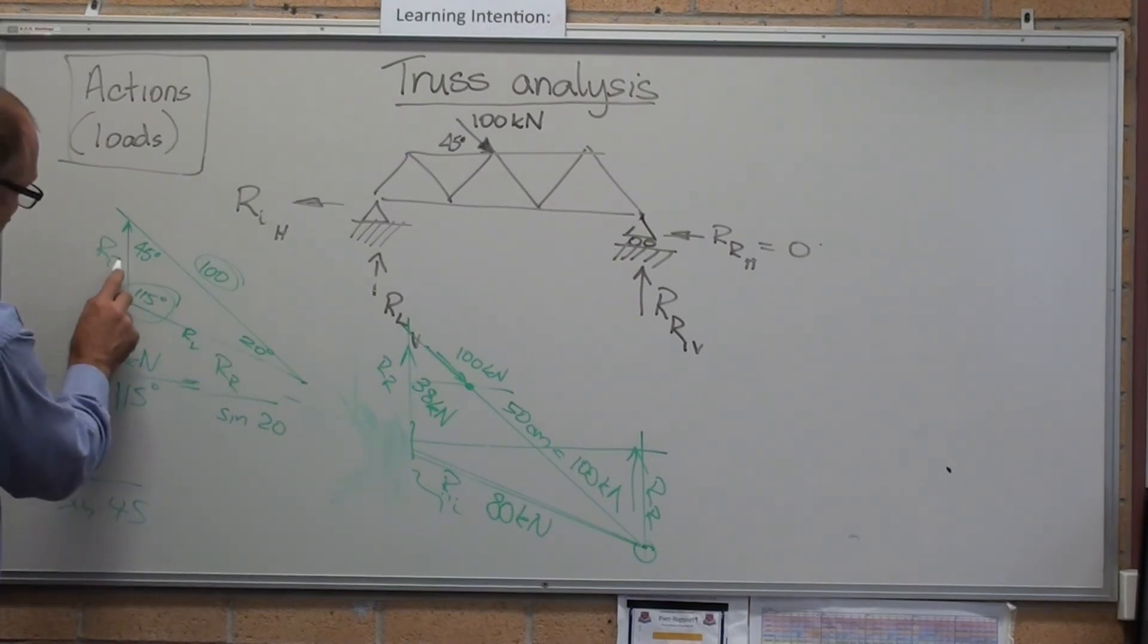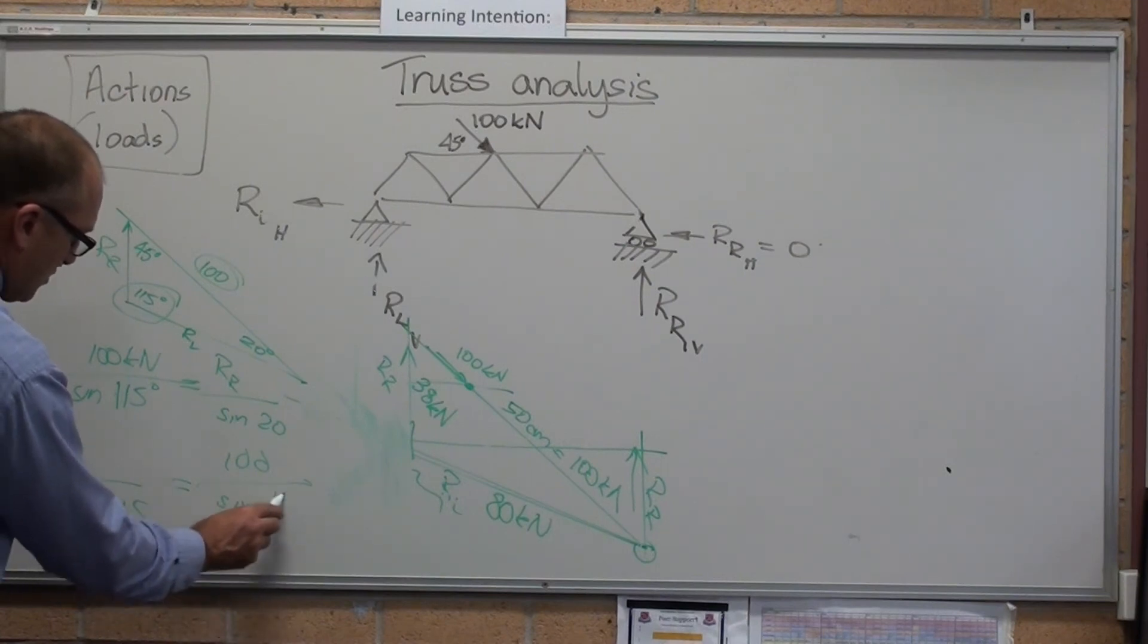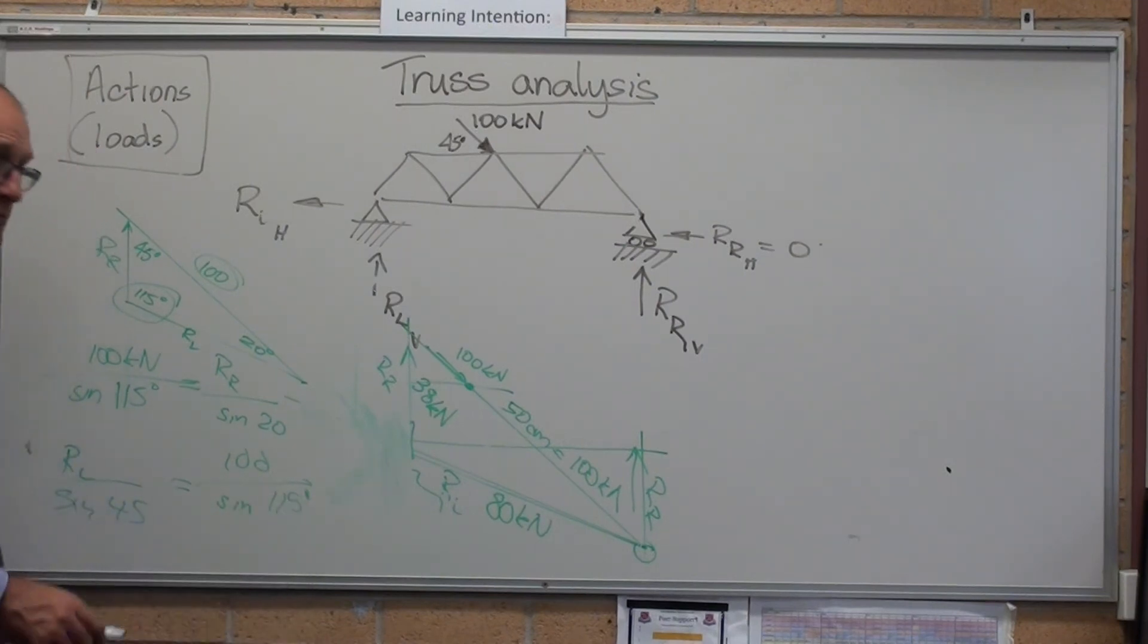Is reaction right on sine 20. Reaction left on sine 45 equals 100 divided by sine 115. And that's just two simple calculations. There's your complete reactions. That's the easiest way to do it. Thank you.